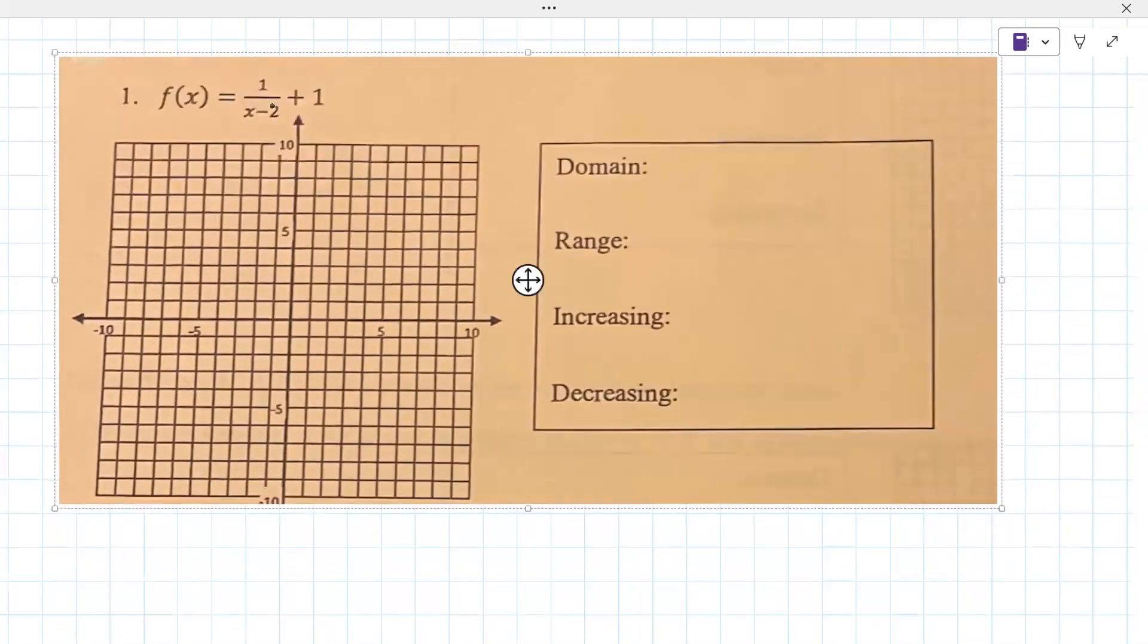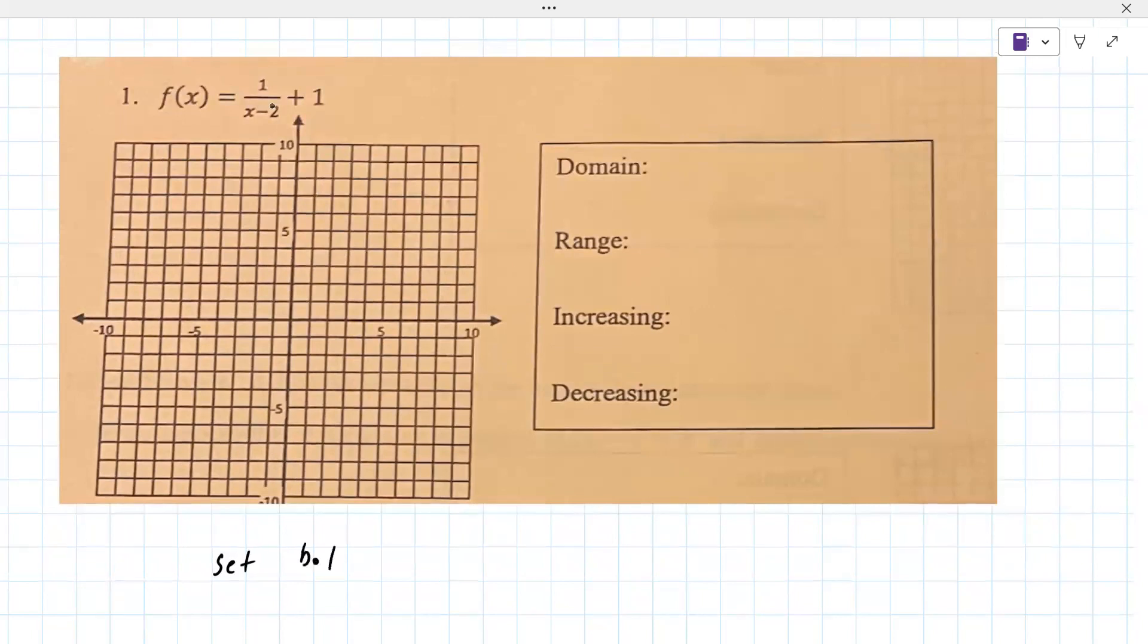So the first thing you do is set the bottom equal to zero. x minus two equal to zero, and you solve for x. So this becomes x equals two. This is what's called a vertical asymptote.